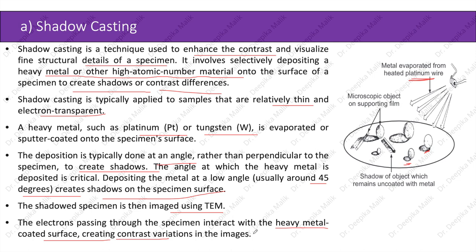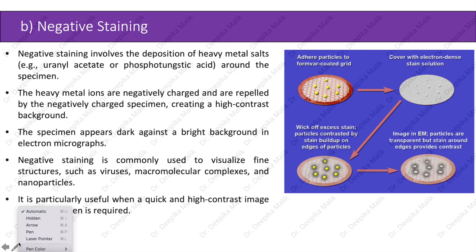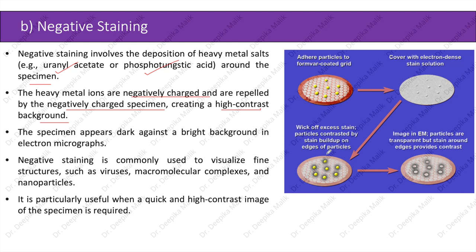Negative staining involves the deposition of heavy metal salts, such as uranyl acetate or phosphotungstic acid, around the specimen. The heavy metal ions are negatively charged and are repelled by the negatively charged specimen, creating a high-contrast background, as seen here. The specimen appears dark against a bright background in electron micrographs. Negative staining is commonly used to visualize fine structures such as viruses, macromolecular complexes, and nanoparticles, and is particularly useful when a quick, high-contrast image is required.